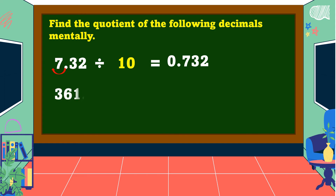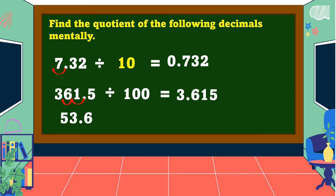Another example: three-hundred-sixty-one and five-tenths divided by one-hundred. In dividing decimals by one-hundred, move the decimal point two decimal places going to the left, and the answer is equal to three and six-hundred-fifteen-thousandths.